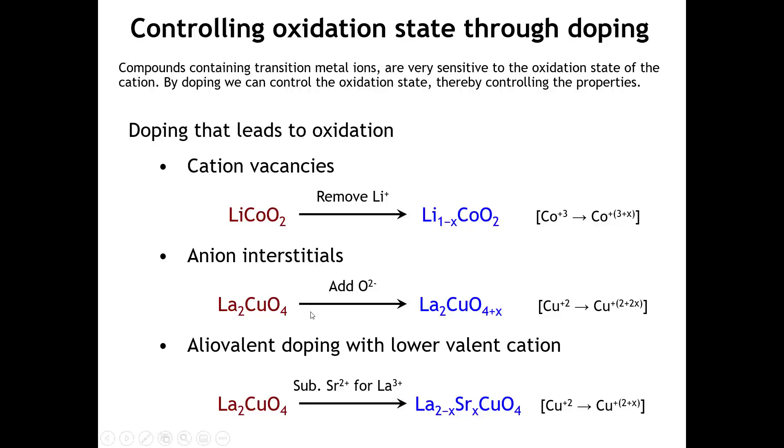If we take the compound lithium cobalt-O2, probably the most important cathode material in lithium ion batteries, and we remove some of the lithium, we're creating cation vacancies. Suddenly we don't have enough positive charge to attain charge balance, so we're going to oxidize some of the cobalt from 3-plus to 4-plus. Another way to put it is the average oxidation state of cobalt goes from plus 3 to a little bit above plus 3.